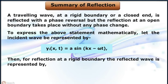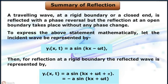Then, for reflection at a rigid boundary, the reflected wave is represented by yr as a function of x, t equals to a sin(kx + ωt + π).